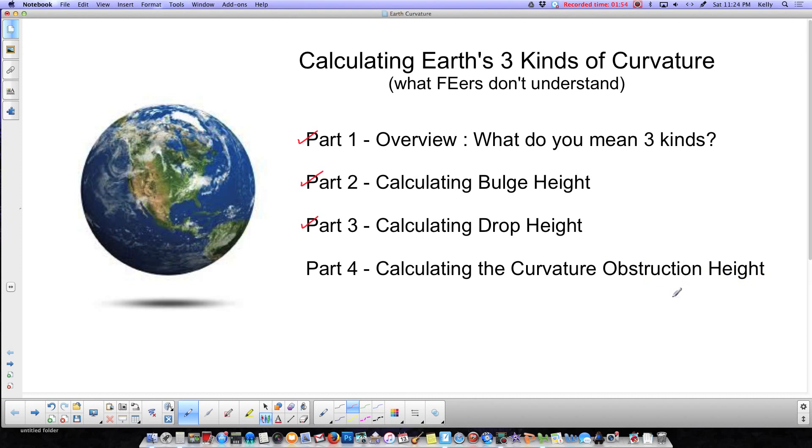And curvature obstruction height is usually the one that you see people talk about because it's the one where you look off over a distant horizon and you can see something that you don't think that you should be able to see. And a lot of times, if you actually do the math behind it properly, you will see that, yeah, you should be able to see that. So right now I'm just going to do an overview on what these three things are.